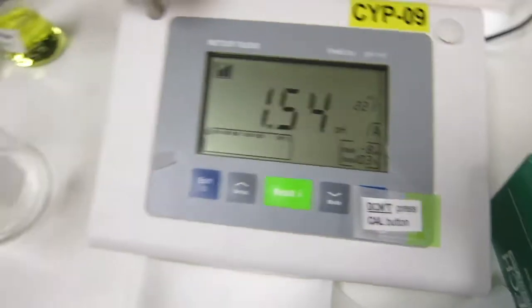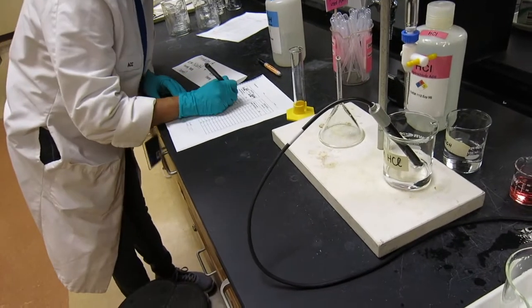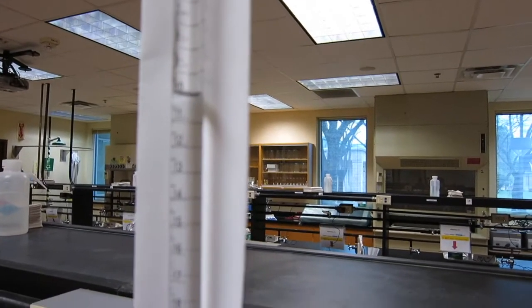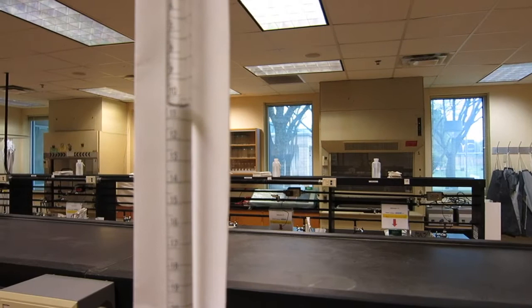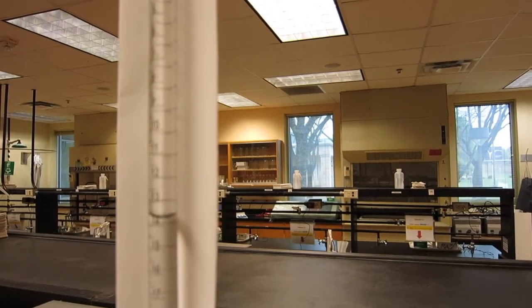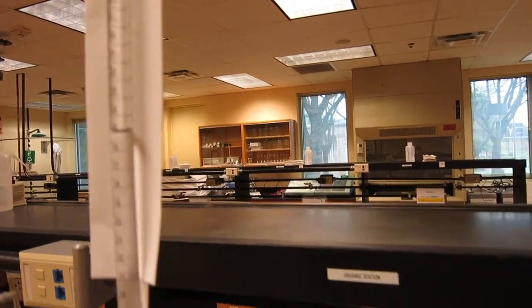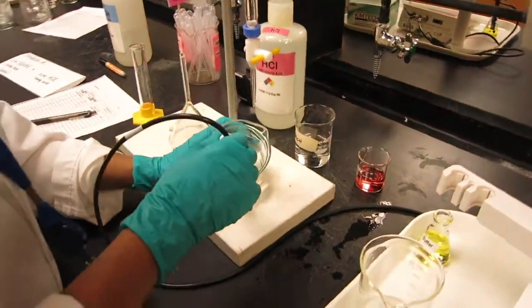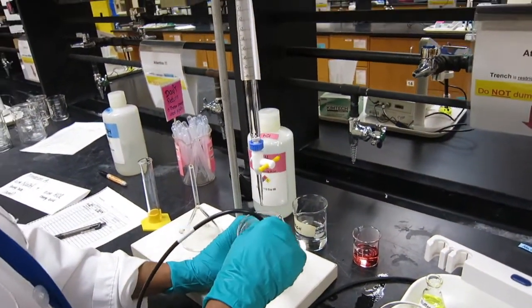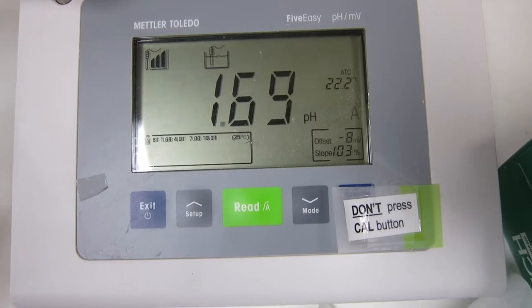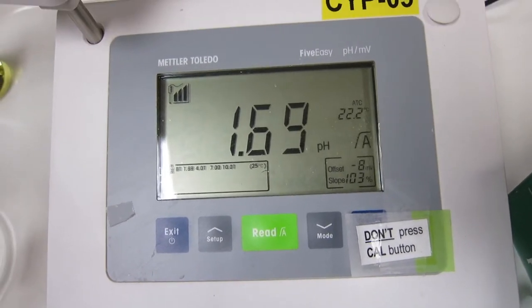It's 1.54. There we go, perfect. Total of 15 mL in the beaker, 15 mL NaOH and 25 mL HCl. Let's read this, keep swirling. It's 1.69. Write it down.